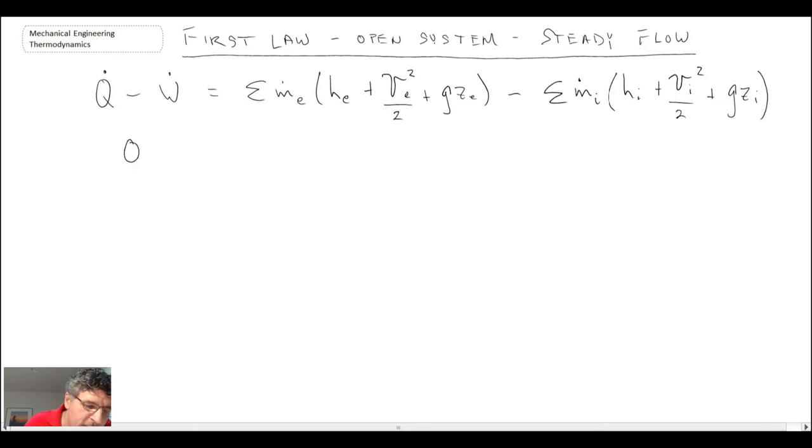The different terms that we have in the equation: Q̇ is the rate of heat transfer. Remember we talked about the definition of the direction, or what would be a positive term here. We'll define it as being positive into our control volume.